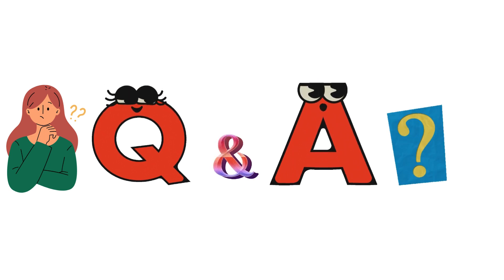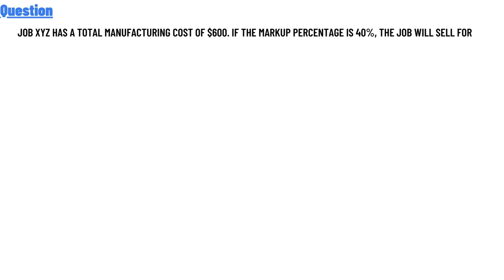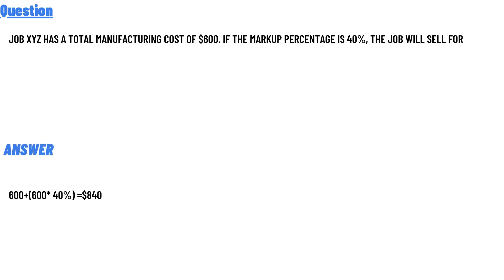Our question today is: Job XYZ has a total manufacturing cost of $600 with a markup percentage of 14%. The correct answer is $600 plus $600 multiplied by 14%, which equals $684. So that's the answer to the question.